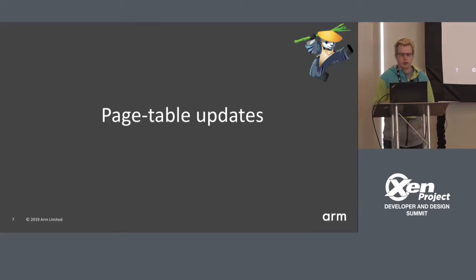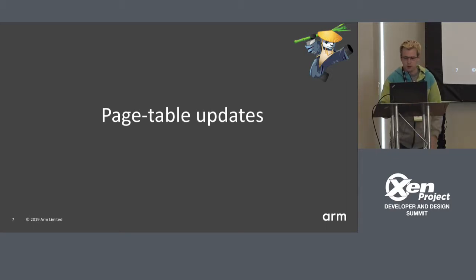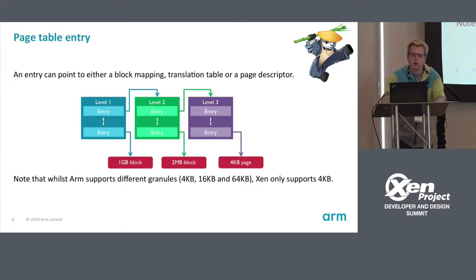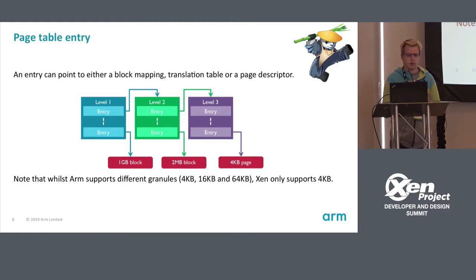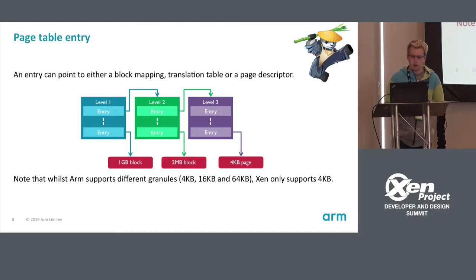The two parts I'm going to cover are page table updates and then how to write and read memory with the MMU. Page tables on ARM are three-level — initially actually four-level because there is another one. Each entry can either point to a block mapping, another translation table, or a page descriptor. Block mappings can be one gigabyte, two megabytes, or 4K. ARM also supports multiple granules: 4K, 16K, and 64K. At the moment Xen mostly supports only 4K, but guests can support 4K, 16K, and 64K.